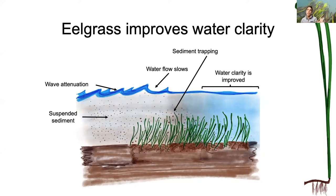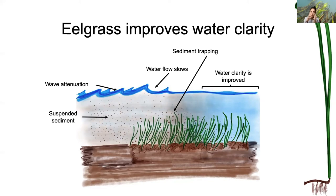A nice analogy to understand this process: when you're making hot chocolate and you pour the powder into the hot milk and stir it, when you stop stirring the chocolate powder starts to settle on the bottom of the mug. Imagine the seagrass is the stopping of the spoon — that slowing of mixing allows the chocolate powder, or in this case the sediment, to settle out.